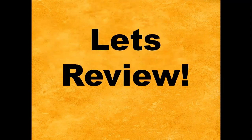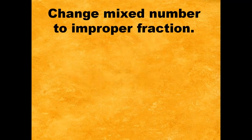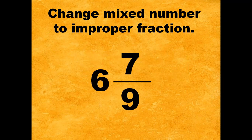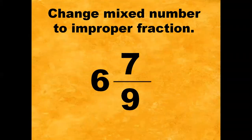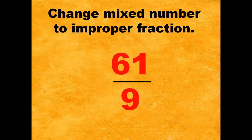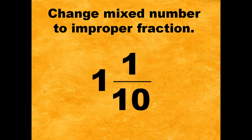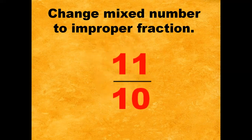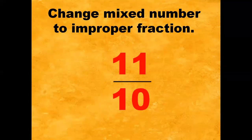But before that, let's review and answer the math challenge in our previous video. Change mixed number to improper fraction. Number 1: 6 and 7 ninths. The answer is 61 ninths. If you got it correctly, congratulations. Number 2: 1 and 1 tenth. If you got 11 tenths, then congratulations.